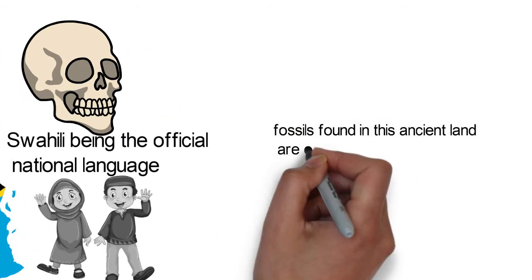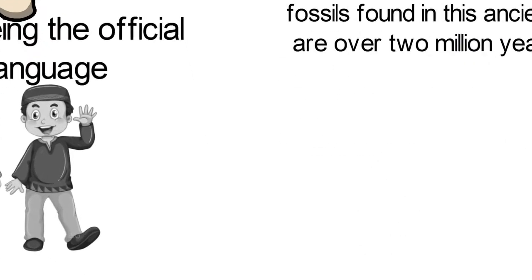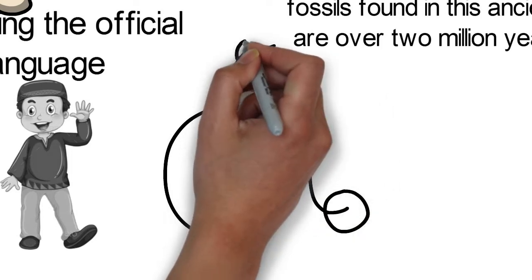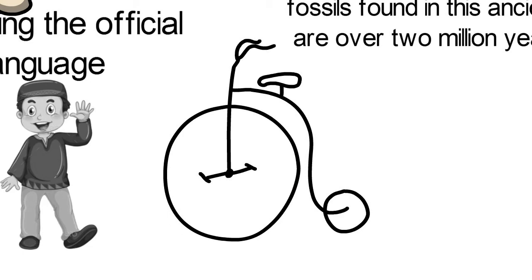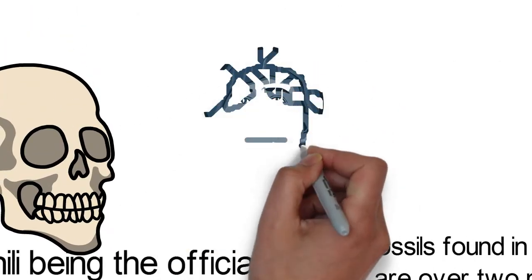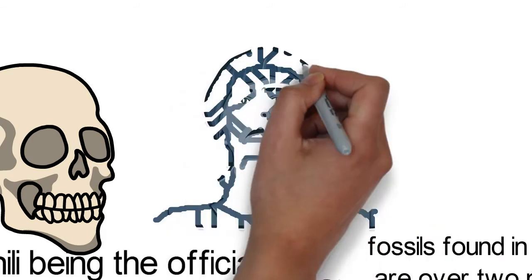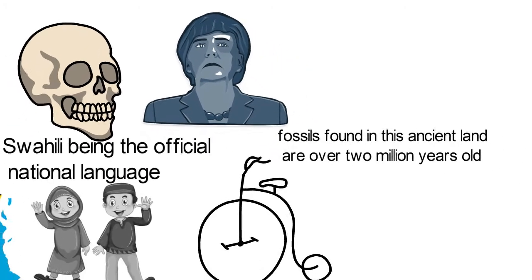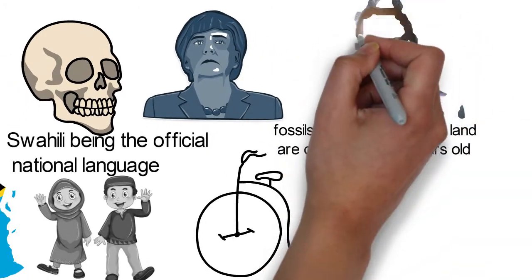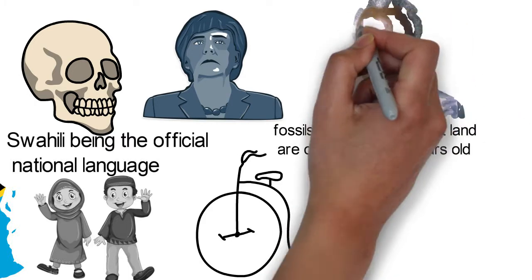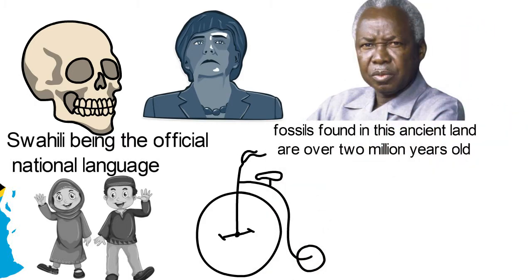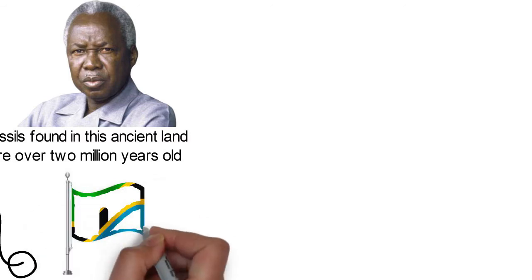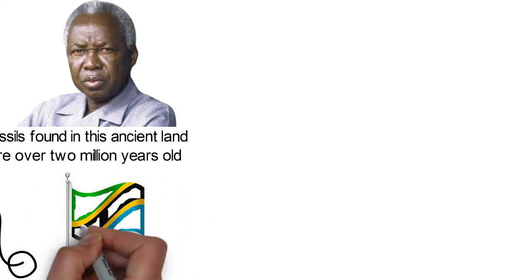The fossils found in this ancient land are over 2 million years old. The Bantu-speaking peoples, who dominate today's Tanzanian population, migrated to the area over 2,000 years ago. They engaged primarily in iron work at the time. They were initially under German rule from 1880 to 1919, when the British took over.